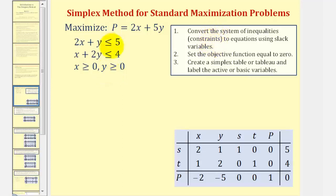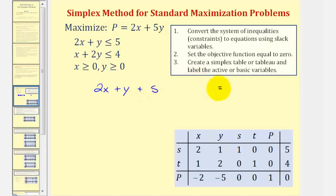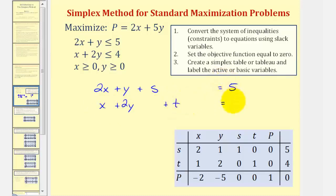Step one: we want to convert these first two inequalities to equations using slack variables. If two x plus y is less than or equal to five, there must be some value which we'll call s so we can make the left side equal to five, meaning we can write the equation two x plus y plus s equals five. For the second inequality, x plus two y is less than or equal to four, so on the left we can add another value we'll call t, so that x plus two y plus t equals four.